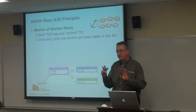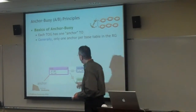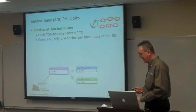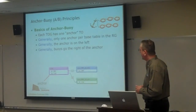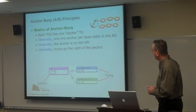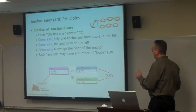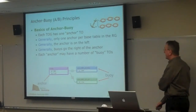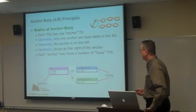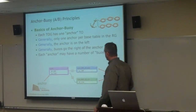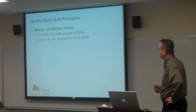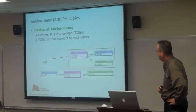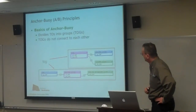In pure Anchor Buoy, the contacts table — called CLN — will only exist as an anchor in one table occurrence group for the entire graph, and it's generally on the left. Buoys are generally on the right. Each anchor may have any number of buoys, and buoys may have buoys off of them, allowing chains to go out unlimited. The method divides table occurrences into groups — TOGs — that do not touch each other. Here you see two TOGs, and never the two shall meet. They should never have relationships between them, which keeps it very simple.